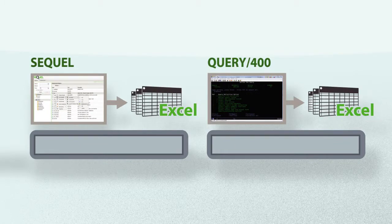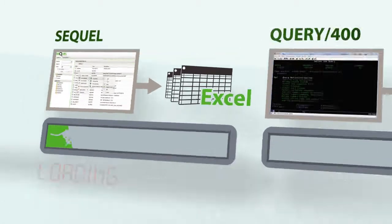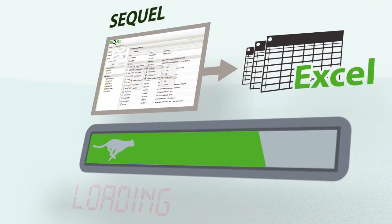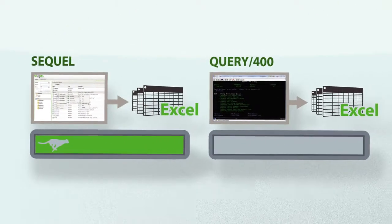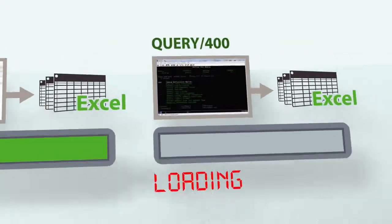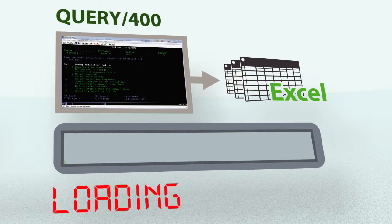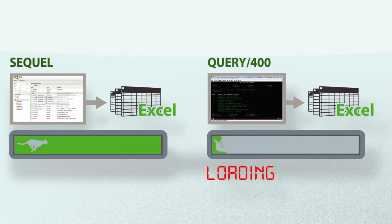With SQL, queries and reports are faster to design and distribute to the business users who need them. When you're using Query 400, it could take hours to see the data because there is no direct path to Excel. But SQL lets you export data to Microsoft Excel in only one step, so you're only two minutes or two clicks away from seeing the results you need.